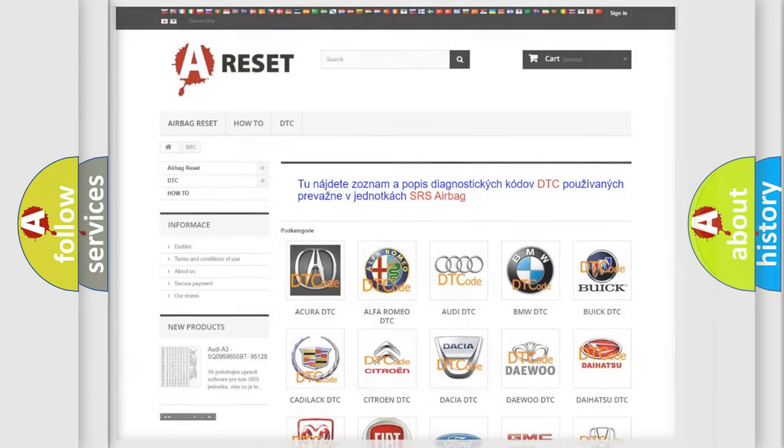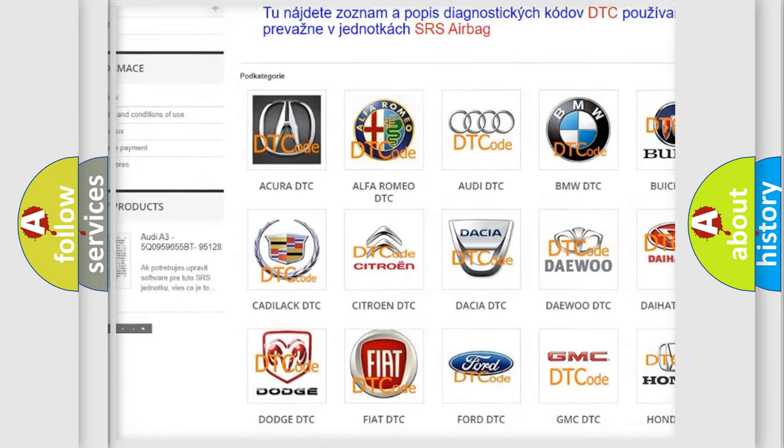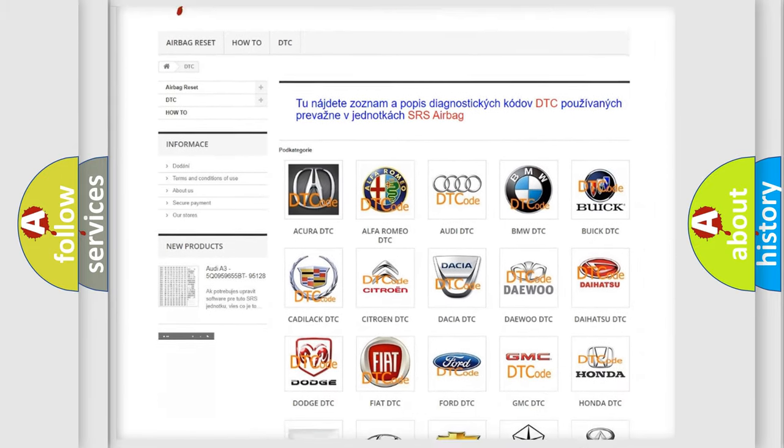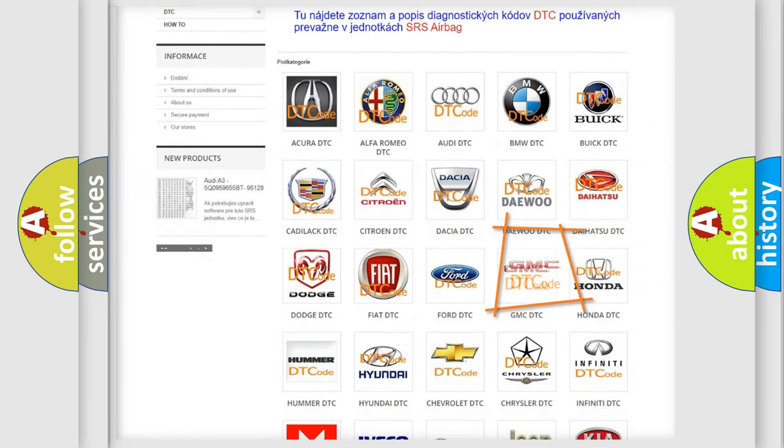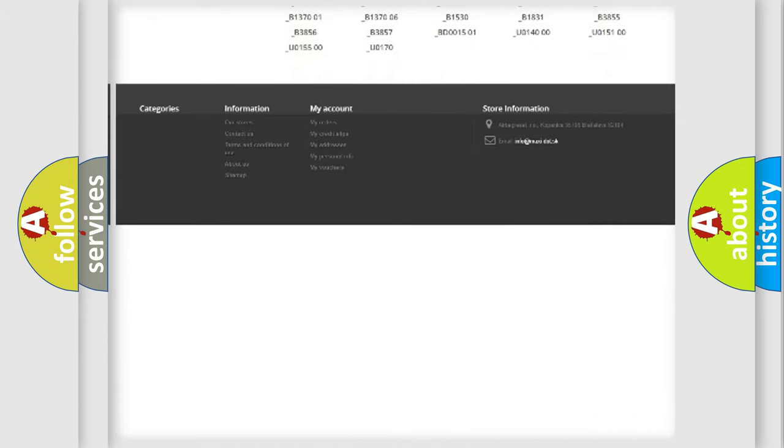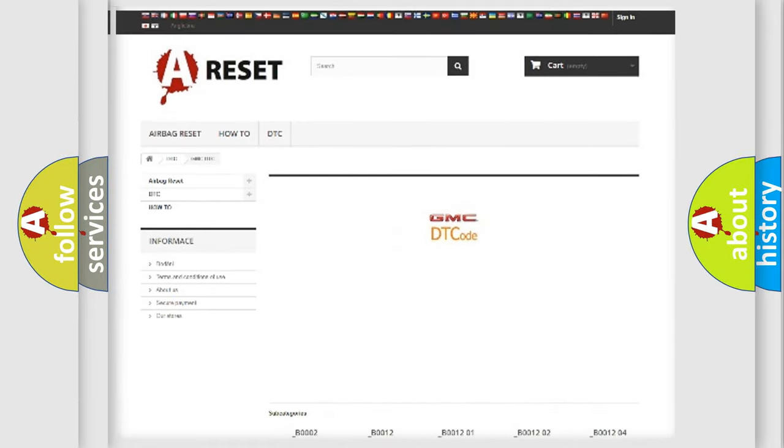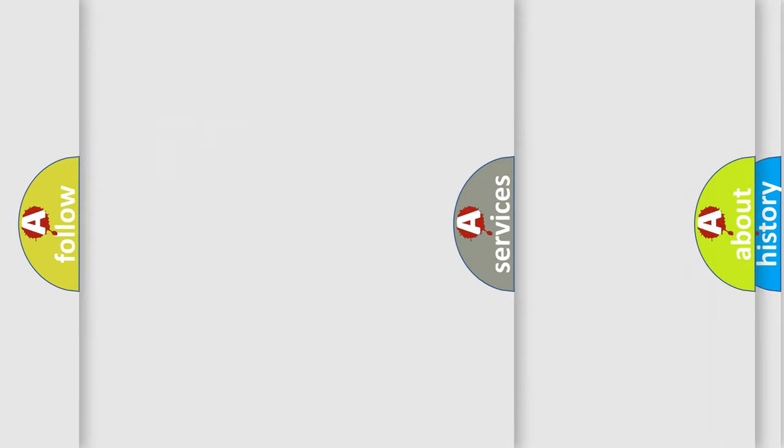Our website airbagreset.sk produces useful videos for you. You do not have to go through the OBD2 protocol anymore to know how to troubleshoot any car breakdown. You will find all the diagnostic codes that can be diagnosed in GMC vehicles, and many other useful things.